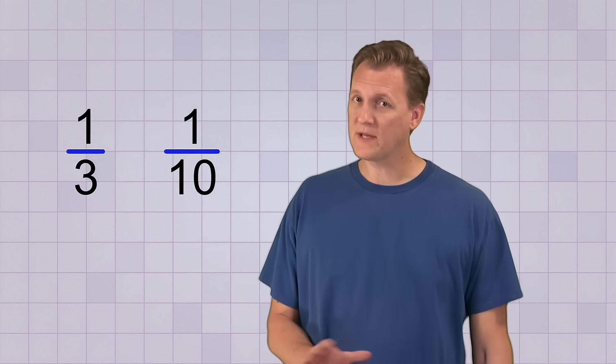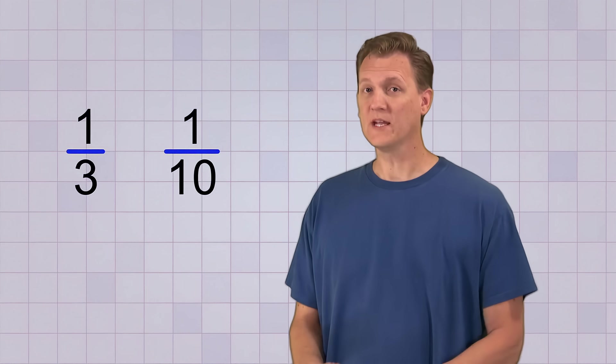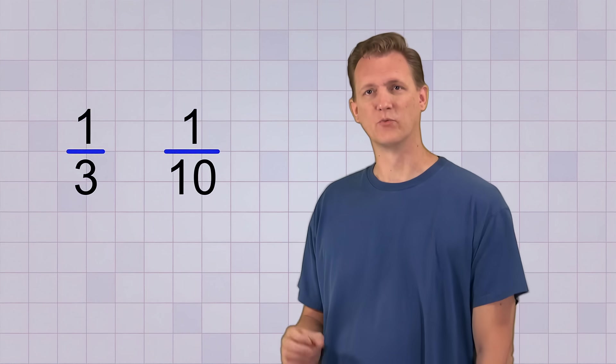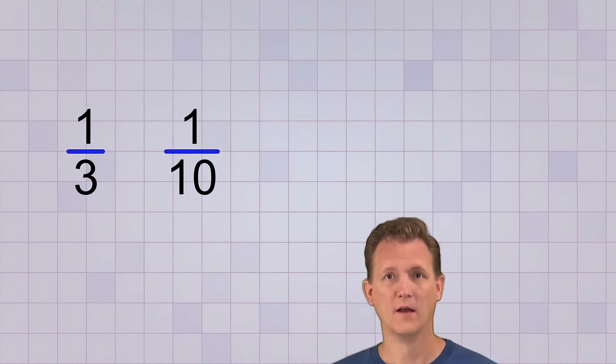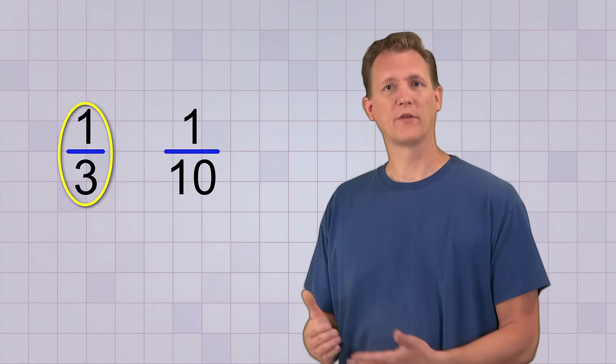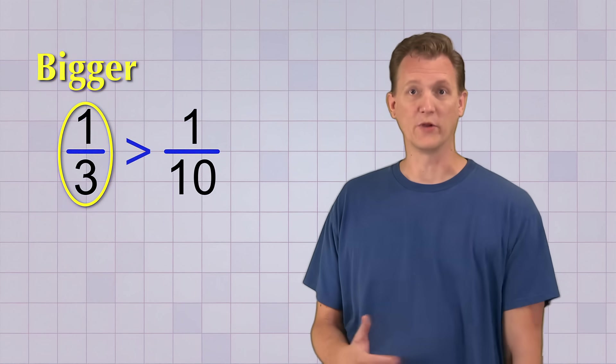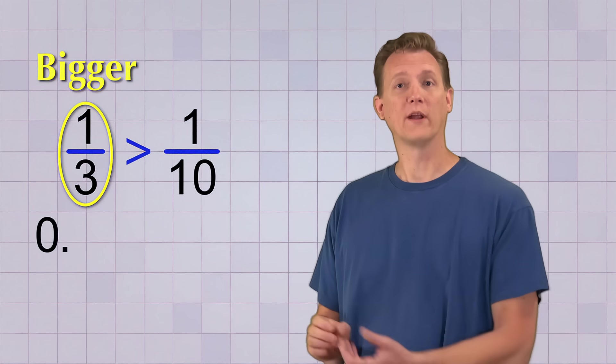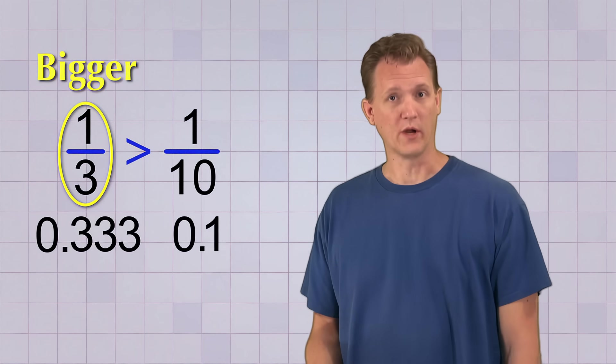For example, if you have to compare these two fractions, 1 over 3 and 1 over 10, some of you might be tempted to say that 1 over 10 is bigger because you know that 10 is bigger than 3, right? But we need to remember that the fraction is really a number written like a division problem, and its value depends on that division. So in this case, the 1 over 3 is really the bigger fraction because its decimal value, what you get when you divide, is 0.33333. But the value of 1 over 10 is only 0.1.